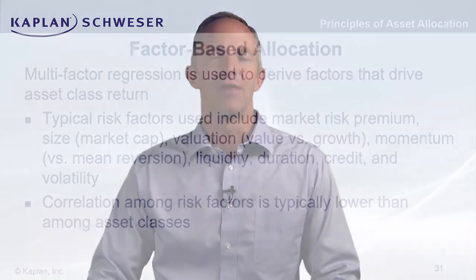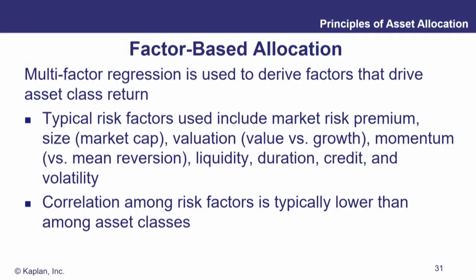We're going to use these standard factors that we've been using all along. We typically start with a market risk premium, just like the CAPM does. But then we may include a size risk premium — small caps tend to outperform large caps, even after you control for the beta.